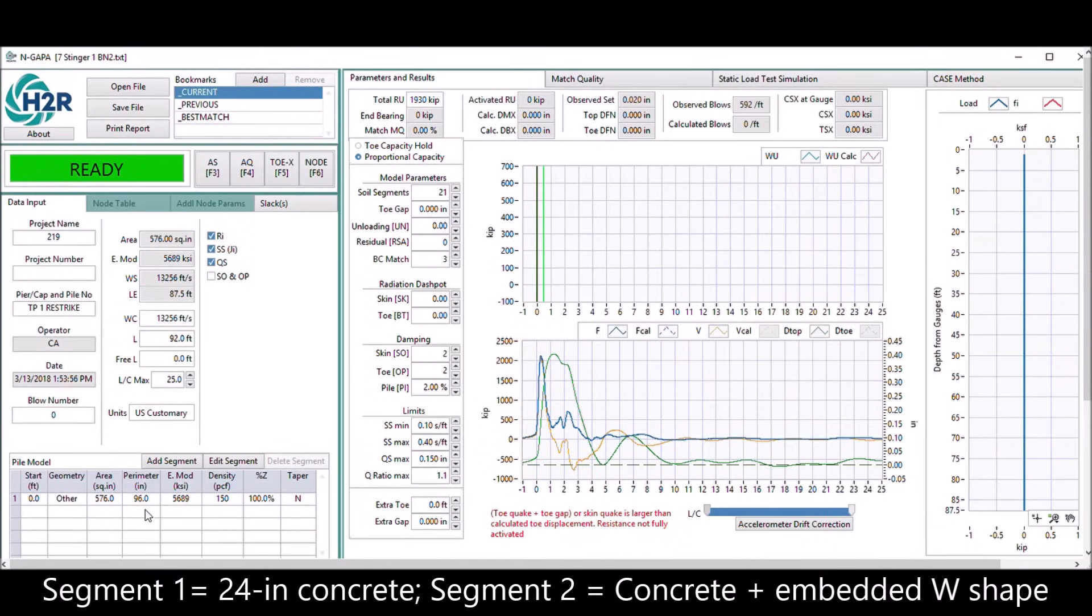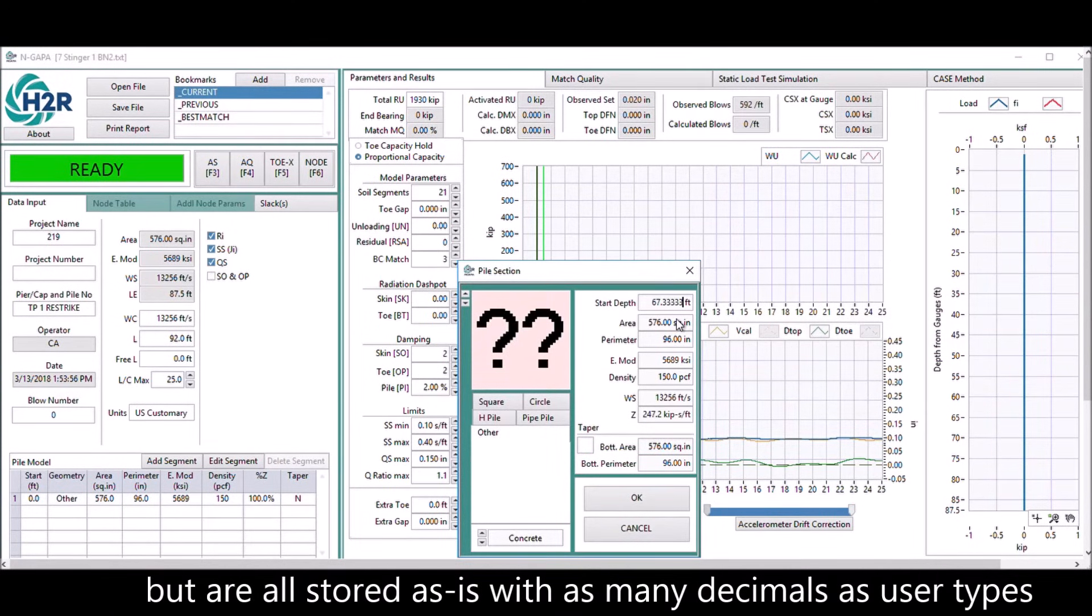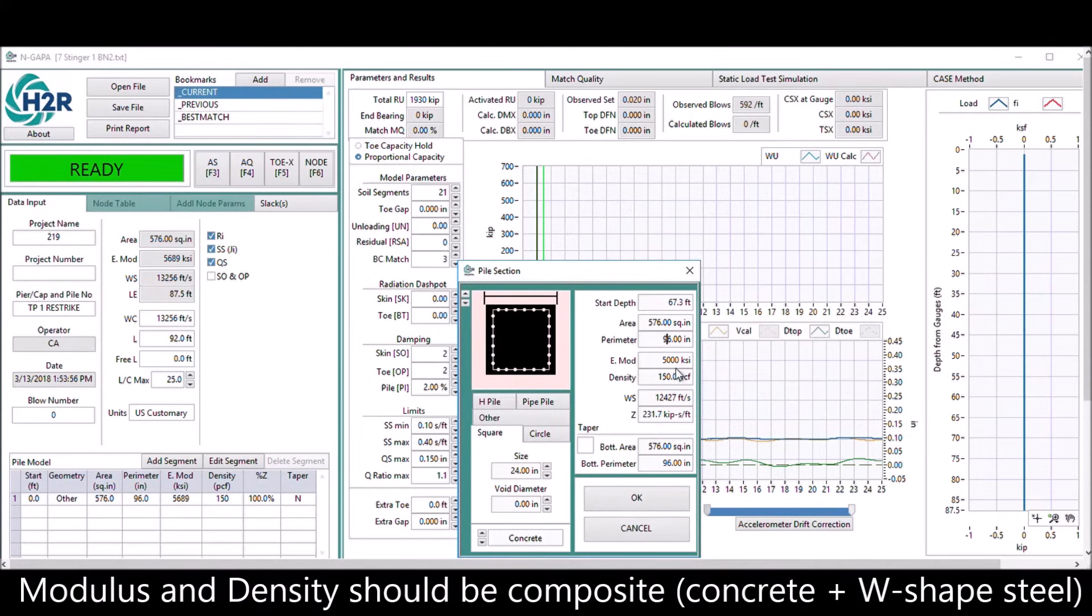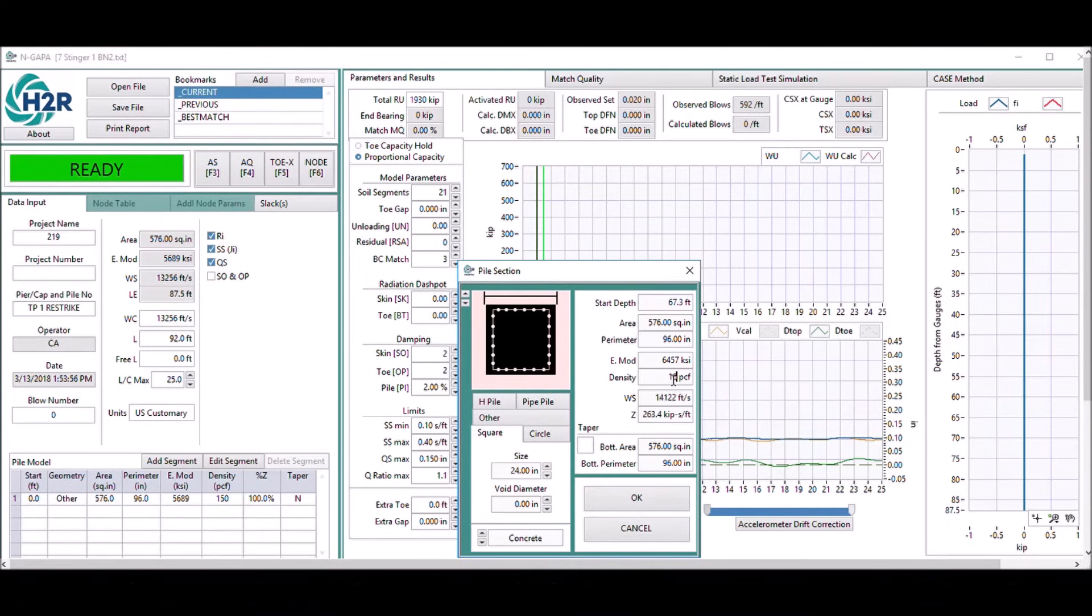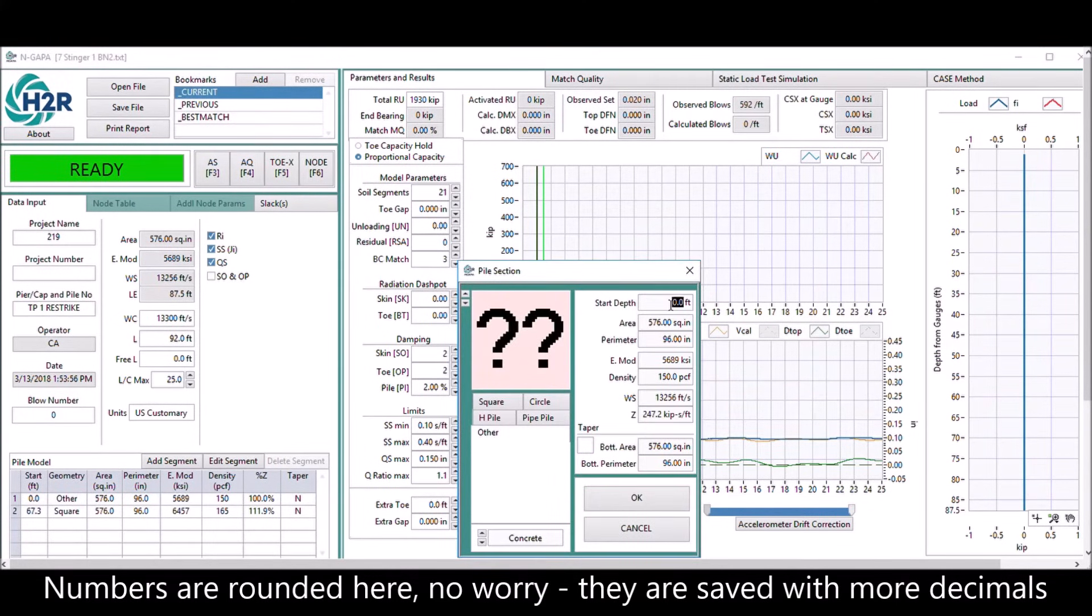We need to model the non-uniform segments. Segment 2 is a composite of concrete and the steel W-shape that is embedded into the concrete. The modulus and the densities are composite numbers calculated by the users. You can use many decimal points here, but it's going to show only the rounded number. Note that the numbers are stored with four decimals, not just a rounded number.